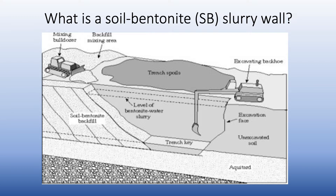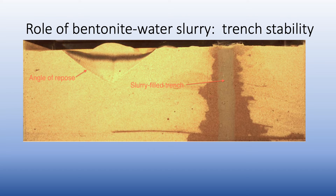A soil bentonite slurry trench cutoff wall is a vertical barrier installed in the subsurface to prevent horizontal groundwater flow and contaminant migration. It's a two-part construction process where first the trench is excavated under a head of bentonite water slurry. As shown in the photograph, excavating in sand produces a wide sloped excavation, whereas excavating under bentonite water slurry maintains essentially vertical trench walls.